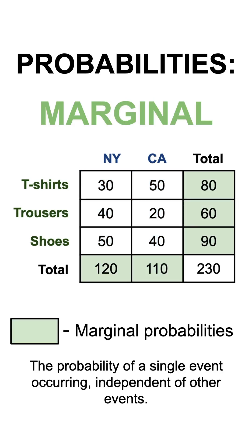Then, the marginal probability outlines how probable it is for an event to occur, independent of all others, and in our example, it is represented by the probability of either selling a piece of clothing or selling in one of the available locations.